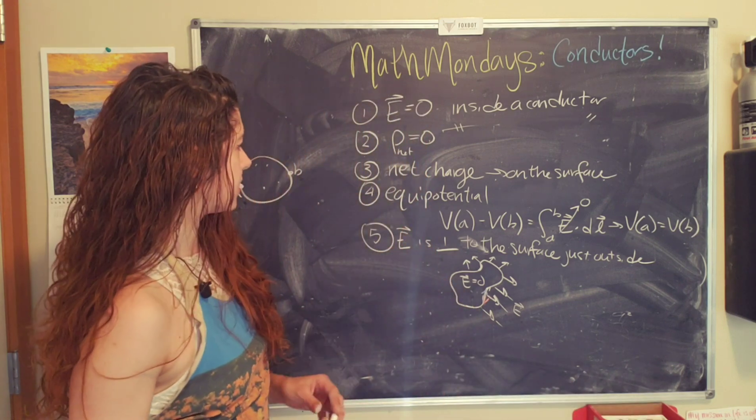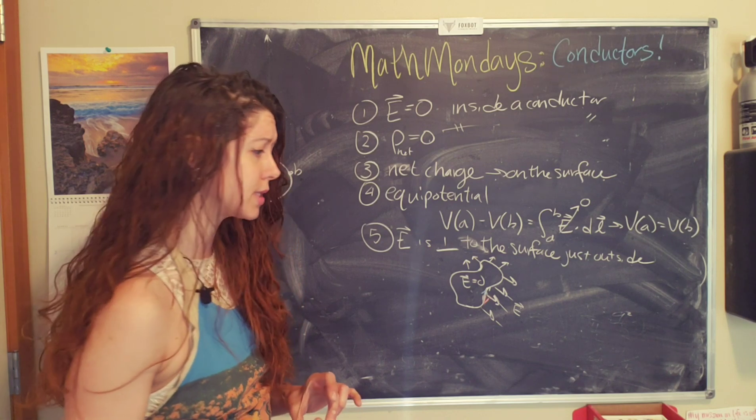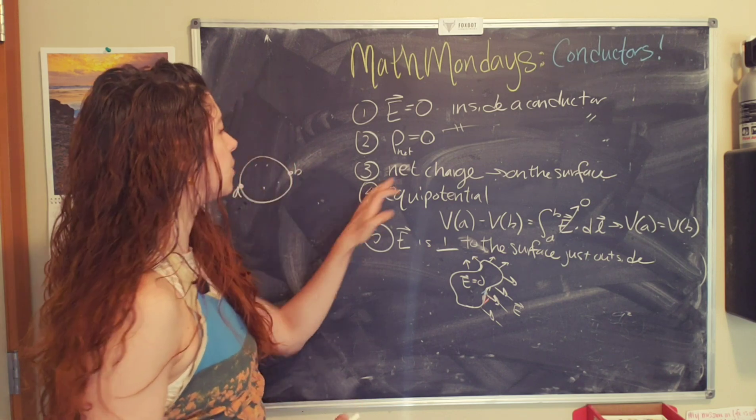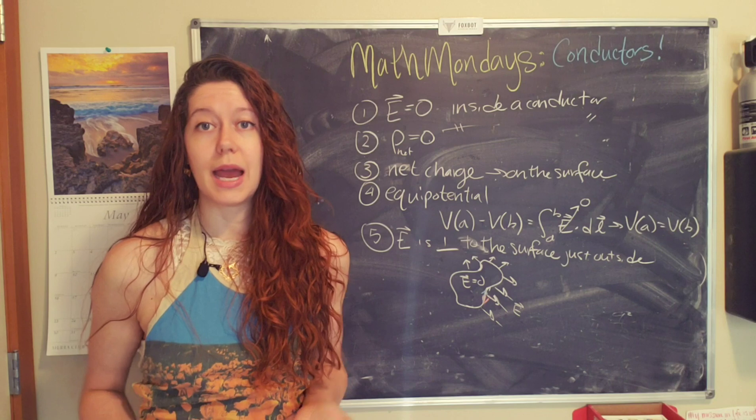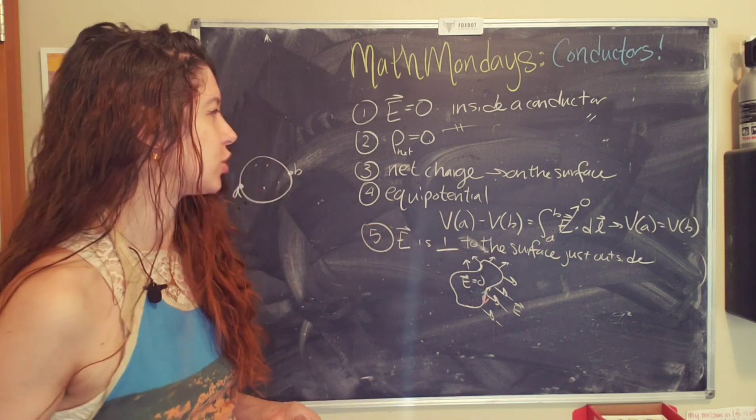So, the last thing that I wanted to look at is why is this net charge on the surface? That is pretty funky. So basically the reason why this happens has to do with energy. The universe likes to minimize energy. Honestly, so do we, we like to be lazy.